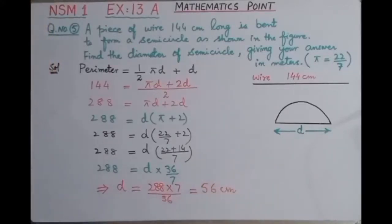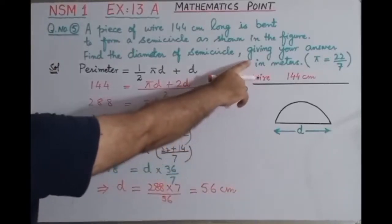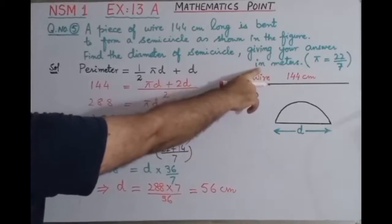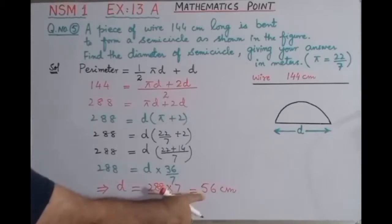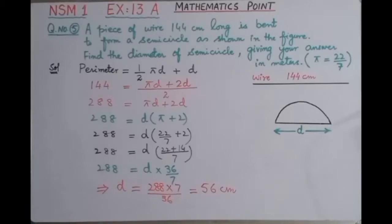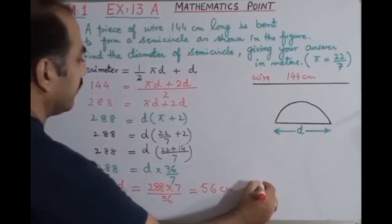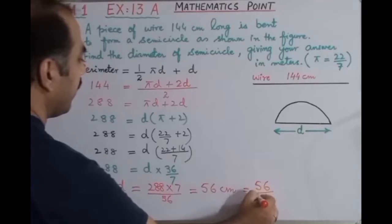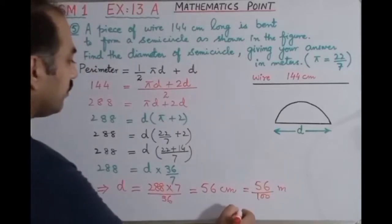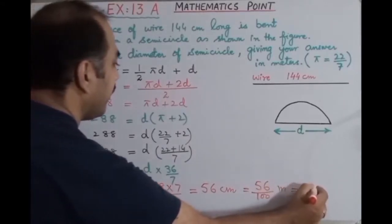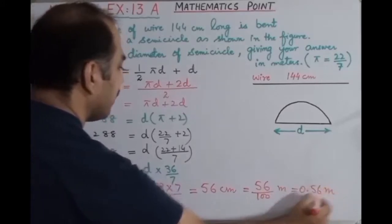So diameter is 56 centimeter, but we have to find our answer in meters. How can we find the answer in meters? We divide this value by 100. So by dividing 56 divided by 100, answer is in meters. The diameter equals 0.56 meters.